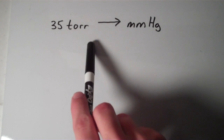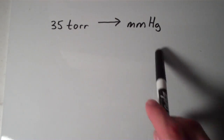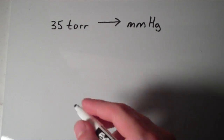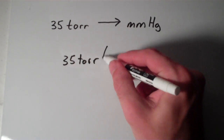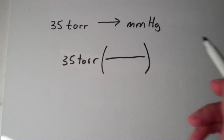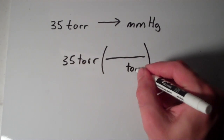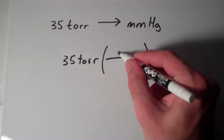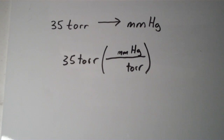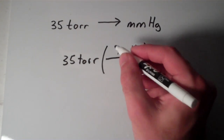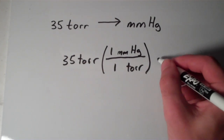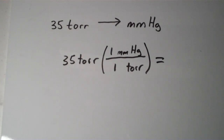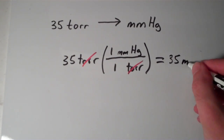Suppose I have a pressure of 35 Torr and I want to convert that 35 Torr into millimeters of Hg. Just like any conversion factor type problem, we're going to put our 35 Torr down and set up a conversion factor. Torr is going to be on the bottom, and the unit I want — millimeters of Hg — is going to be on the top. This one's easy because one millimeter of mercury is equal to one Torr. They are equivalent, so our Torr cancels and we are left with 35 millimeters of mercury.